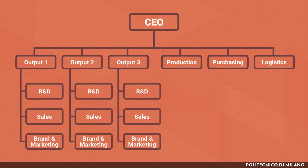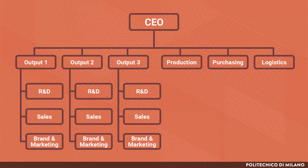On the other hand, divisional units are used mainly for those areas facing a huge variety as well as complexity, and that have the need to react to quick changes of market. Considering the same manufacturing company, typical examples might pertain to the design and R&D department, the sales department, and sometimes to brand management and marketing department too.